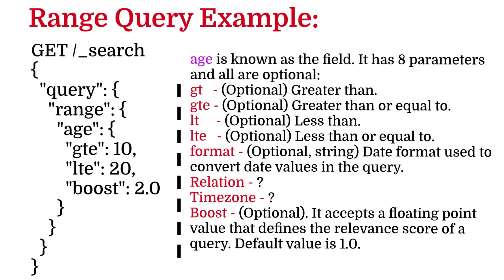The next is format, which is optional. It's a string type. Date format is used to convert date values in the query. By default, Elasticsearch uses the date format provided in the fields mapping. This value overrides that mapping format.